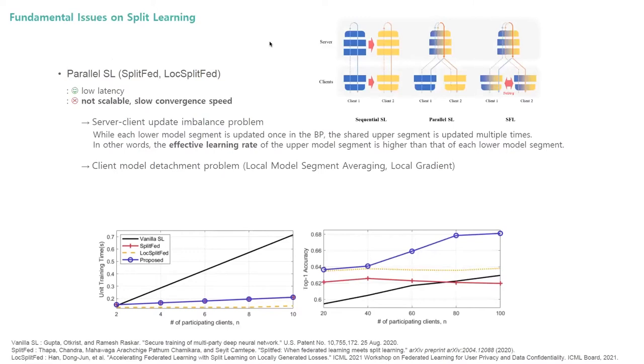In particular, to catch up the convergence speed of vanilla SL, SplitFed learning integrates federated averaging into SL and exchanges lower-model segments across the clients after backpropagation. Similarly, inspired by local parallel training, localized SplitFed, hereafter referred to as LocSplitFed, additionally updates each lower-model segment using the local gradient computed within each client's model segment. Unfortunately, both SplitFed and LocSplitFed are not scalable. The fundamental reason for such limited scalability is inherent to parallel split model architecture.